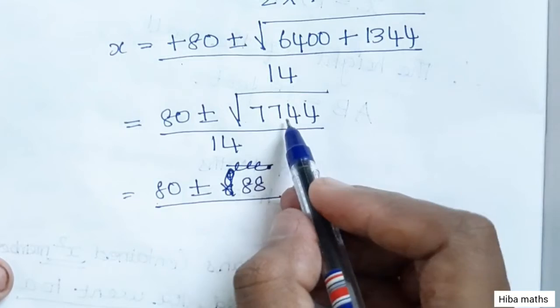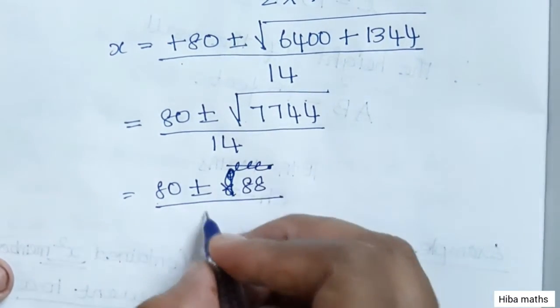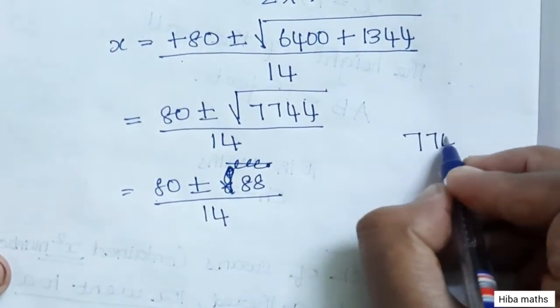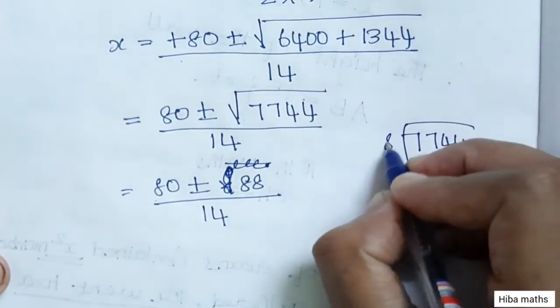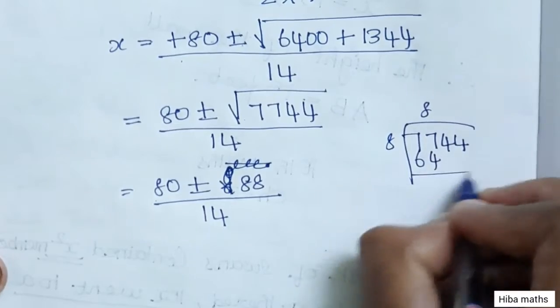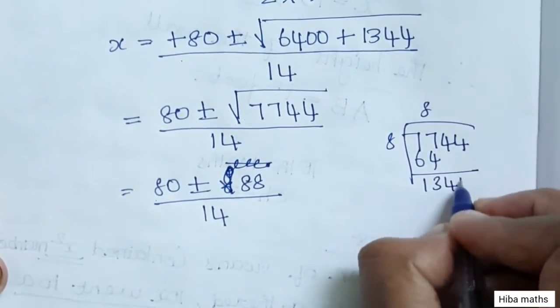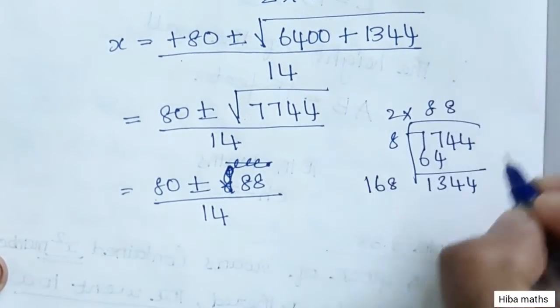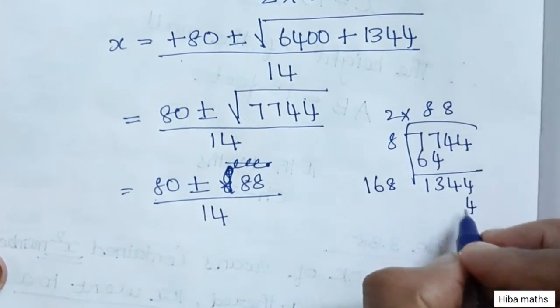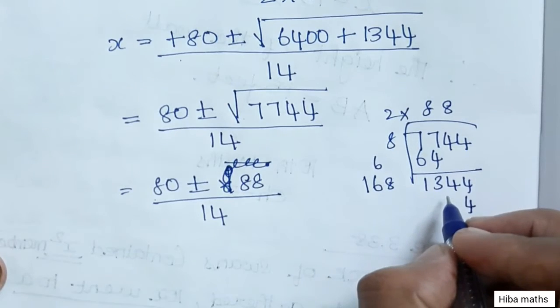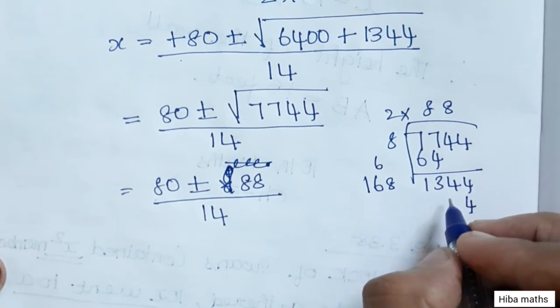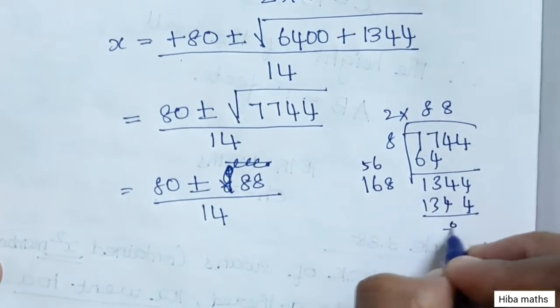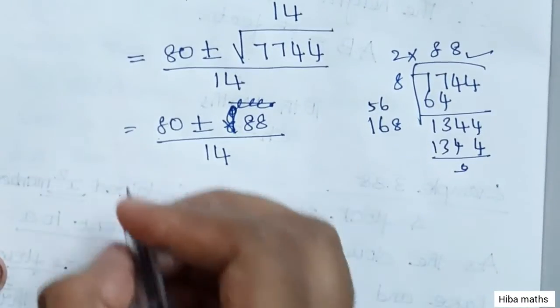Using long division, √7744 = 88. So x = (80 ± 88) / 14.